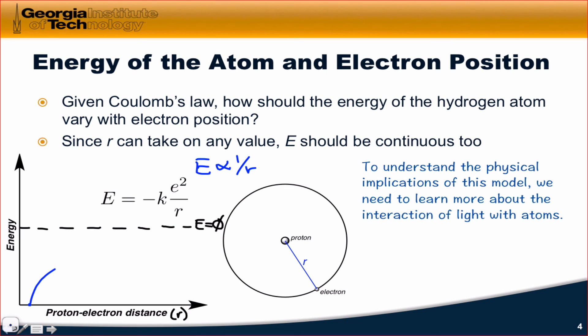What happens as we move to higher r? We're getting closer and closer to 1 over r being equal to zero. In the limit that r is infinity, 1 over r will be equal to zero and we'll reach that zero of energy line.